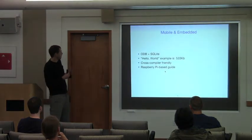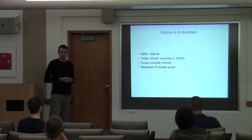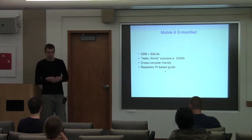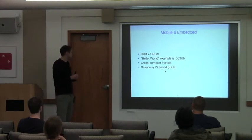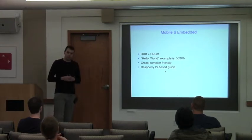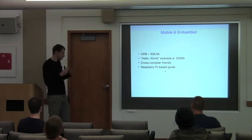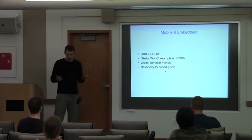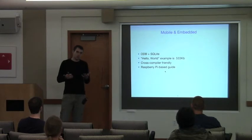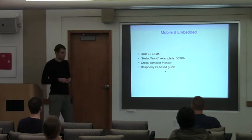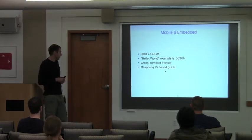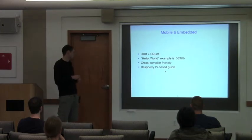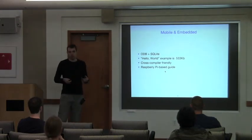ODB and SQLite turned out to be quite a popular combination for mobile and embedded projects. A statically linked Hello World application — which also uses queries and things like that — built for Raspberry Pi is about 500 kilobytes. That includes the ODB runtime and SQLite, which itself is over 400 kilobytes. We have a guide for cross-compiling ODB for Raspberry Pi and now also for Android.